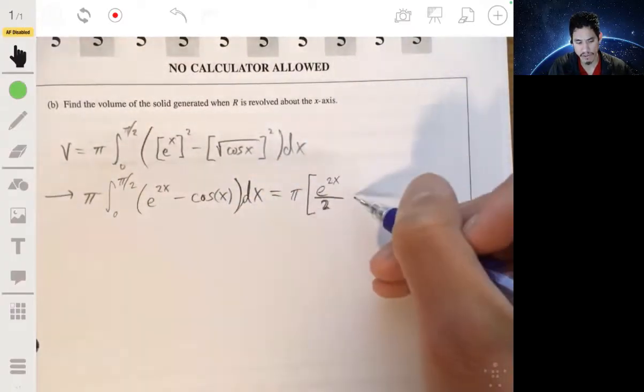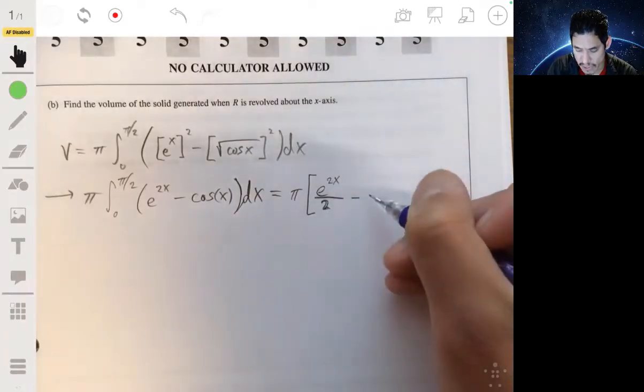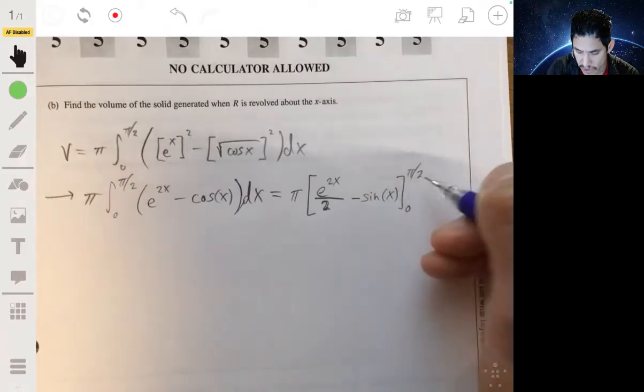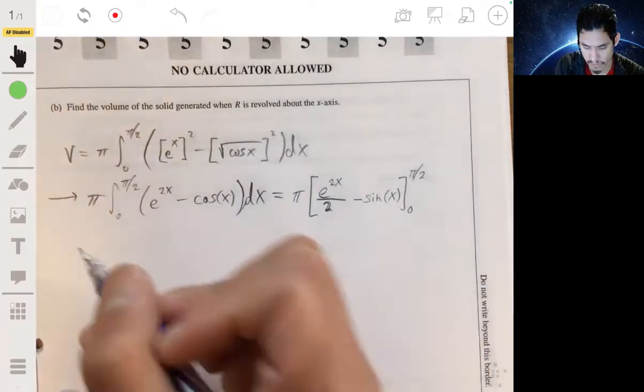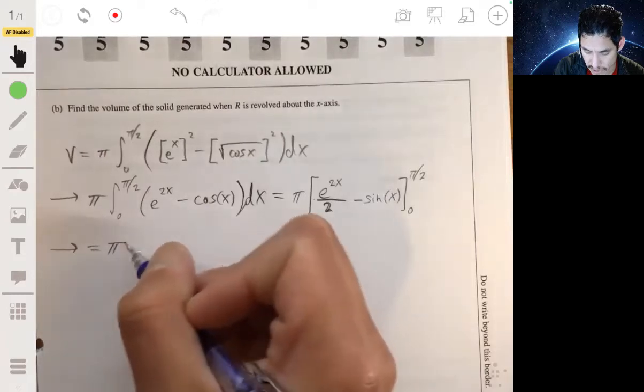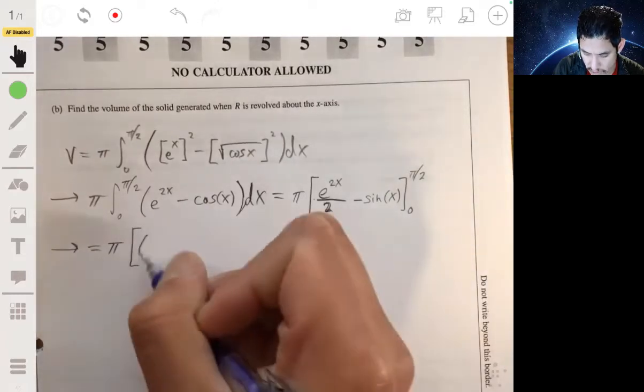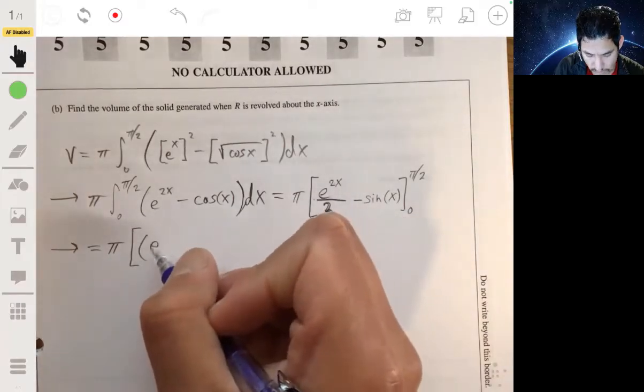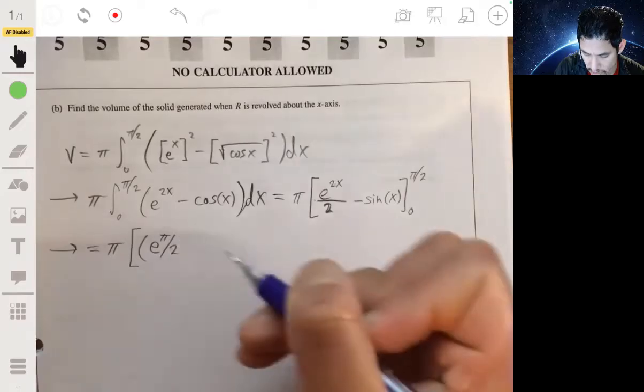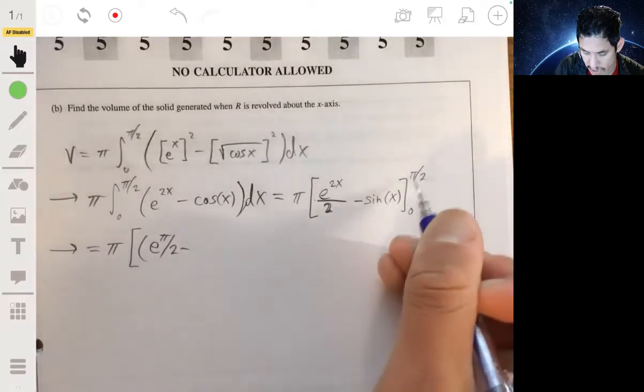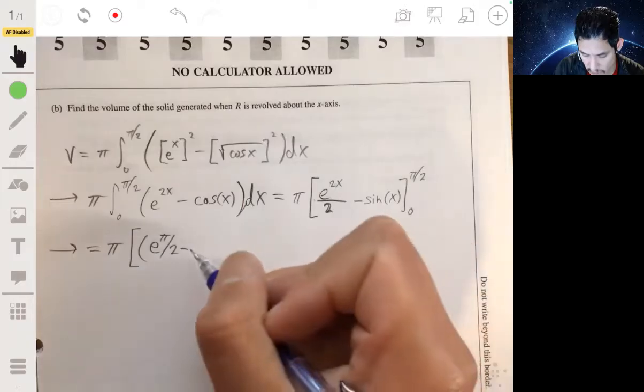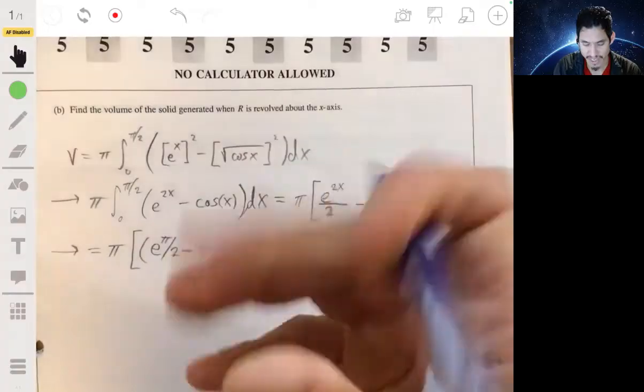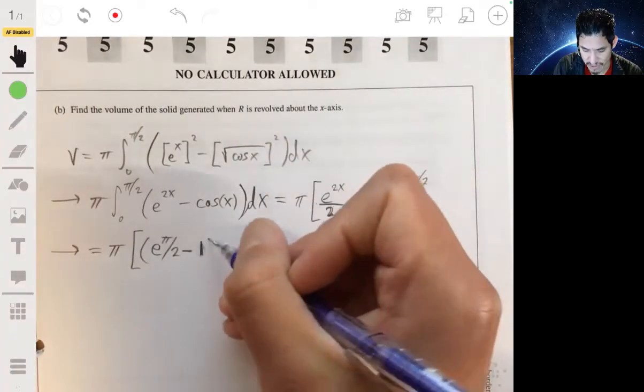And the antiderivative of cosine x would be sine x. And we evaluate this from 0 to π/2, and then multiply by π. So π times e^(2·π/2), or just e^π over 2, minus sine of π/2. The sine of π/2 is just one. Don't make that mistake like I just did.